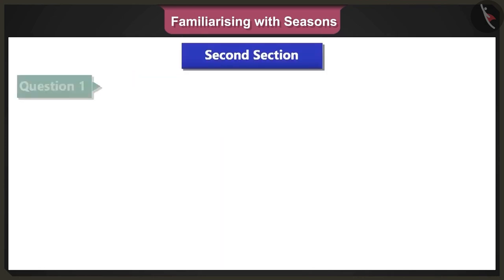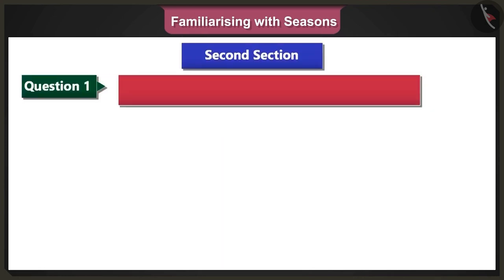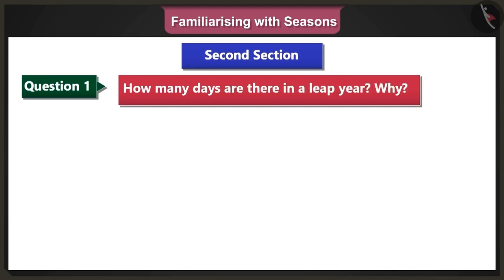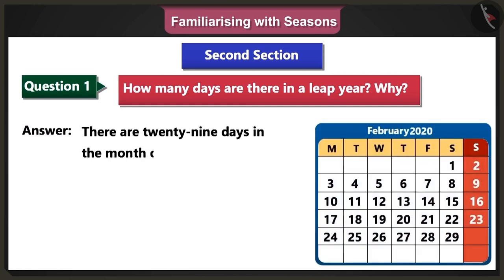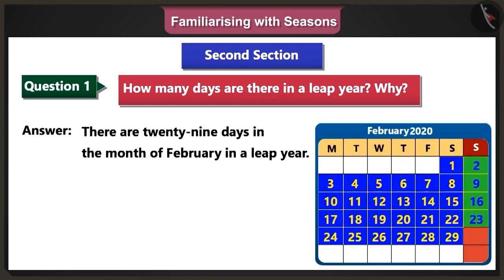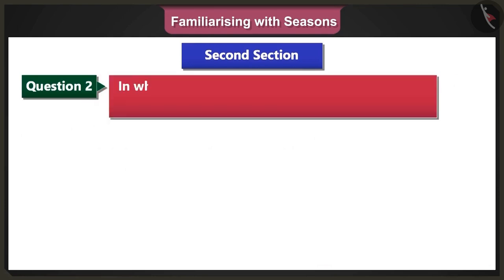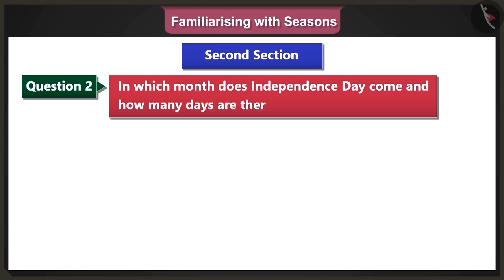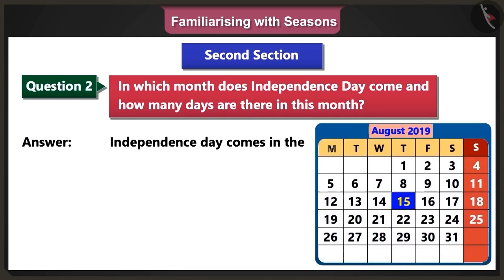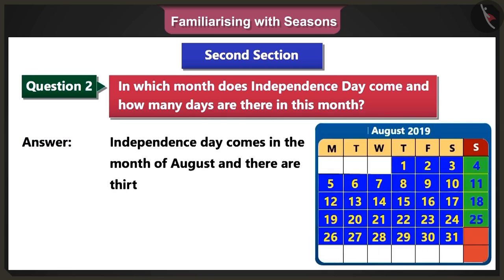First question of the second section: How many days are there in a leap year, and why? Answer: There are 29 days in the month of February in a leap year. Hence, there are 366 days in this year. Second question: In which month does Independence Day come, and how many days are there in this month? Answer: Independence Day comes in the month of August, and there are 31 days in this month.